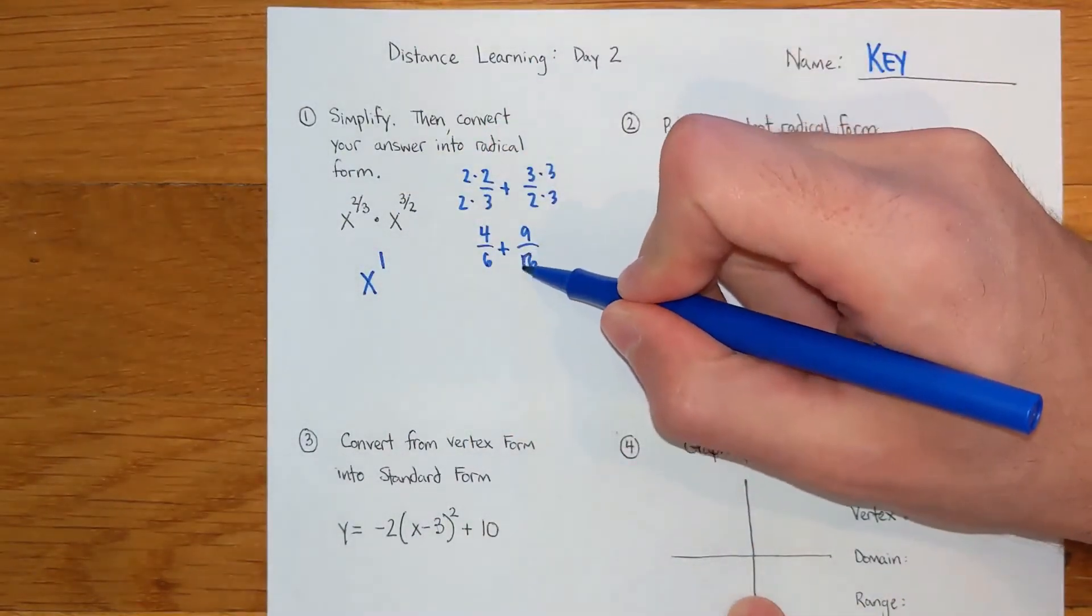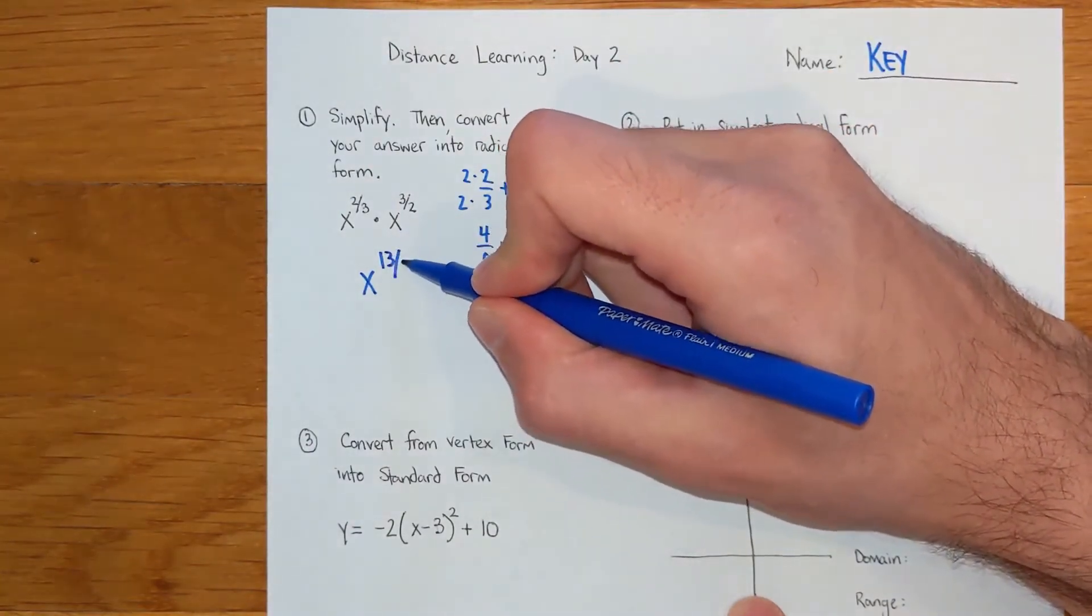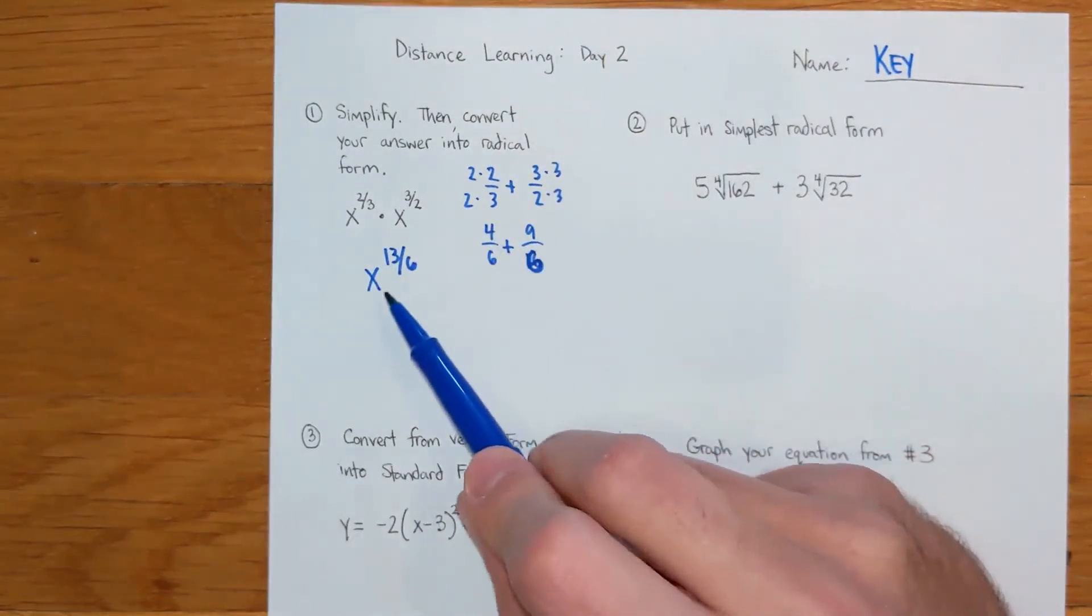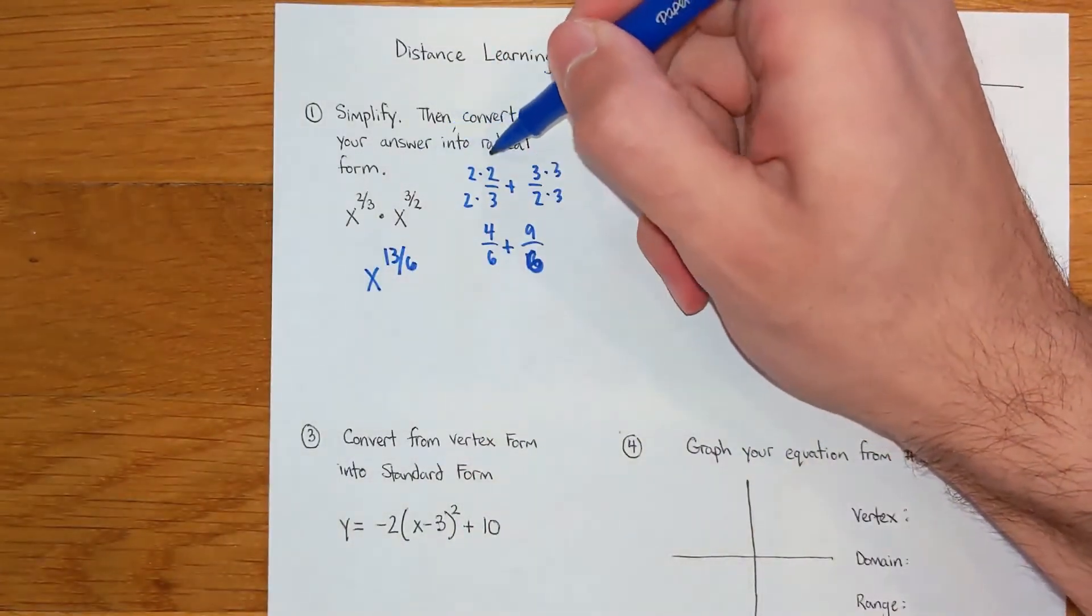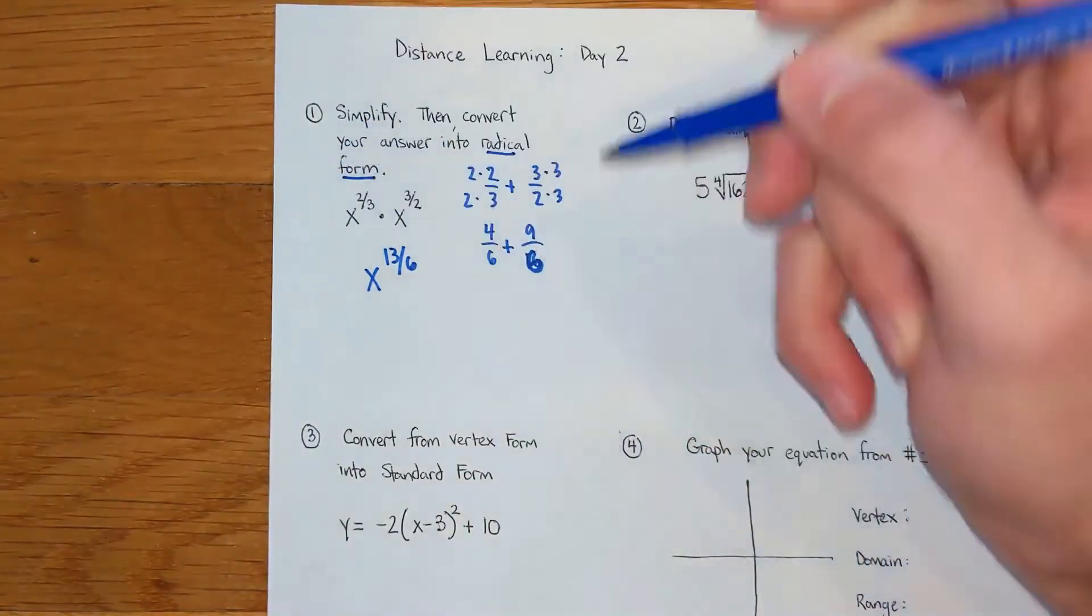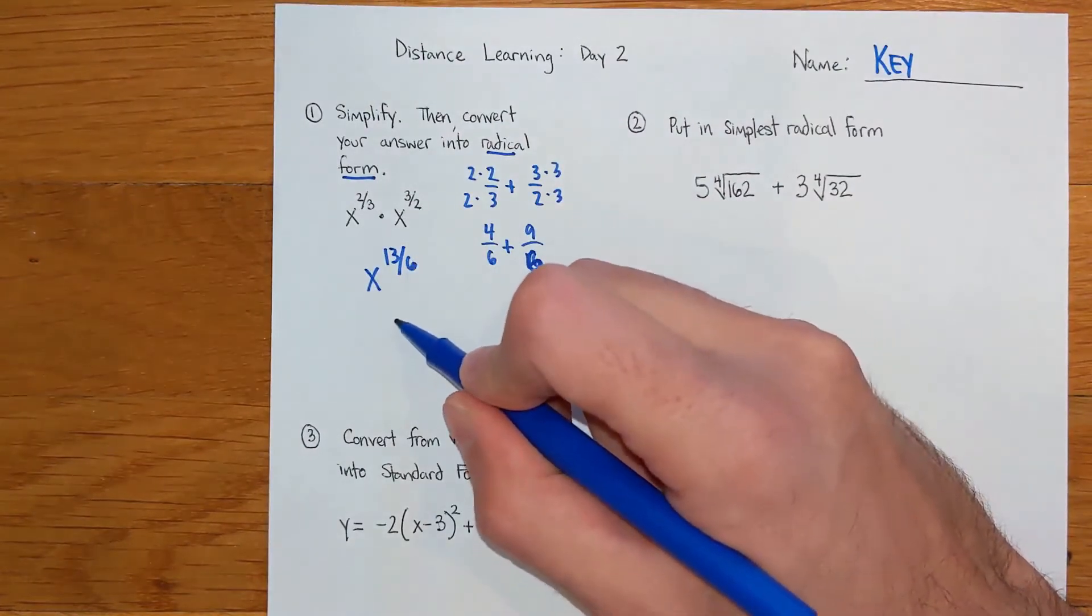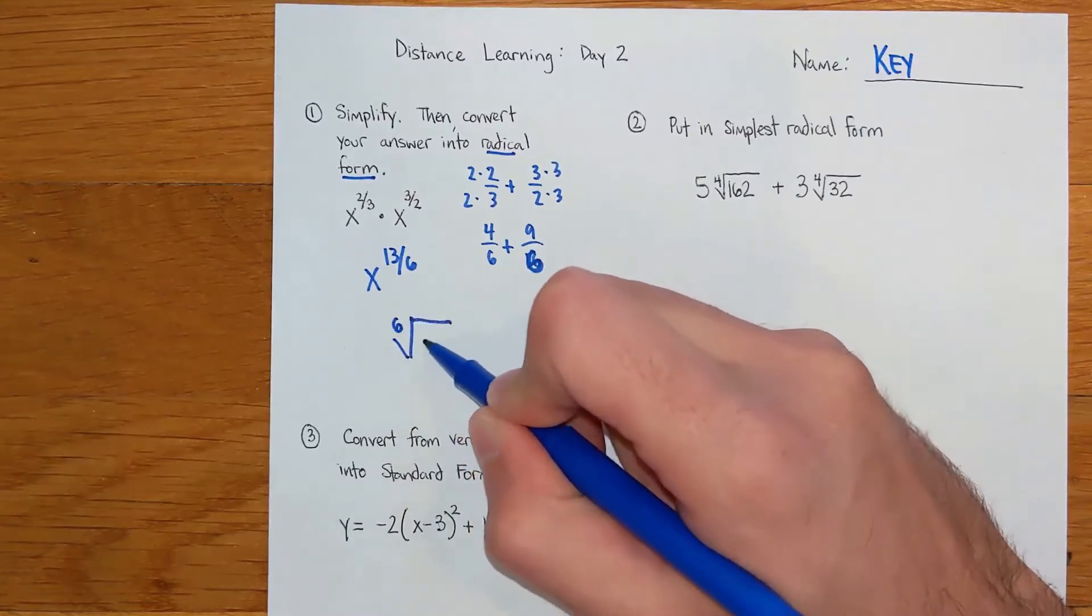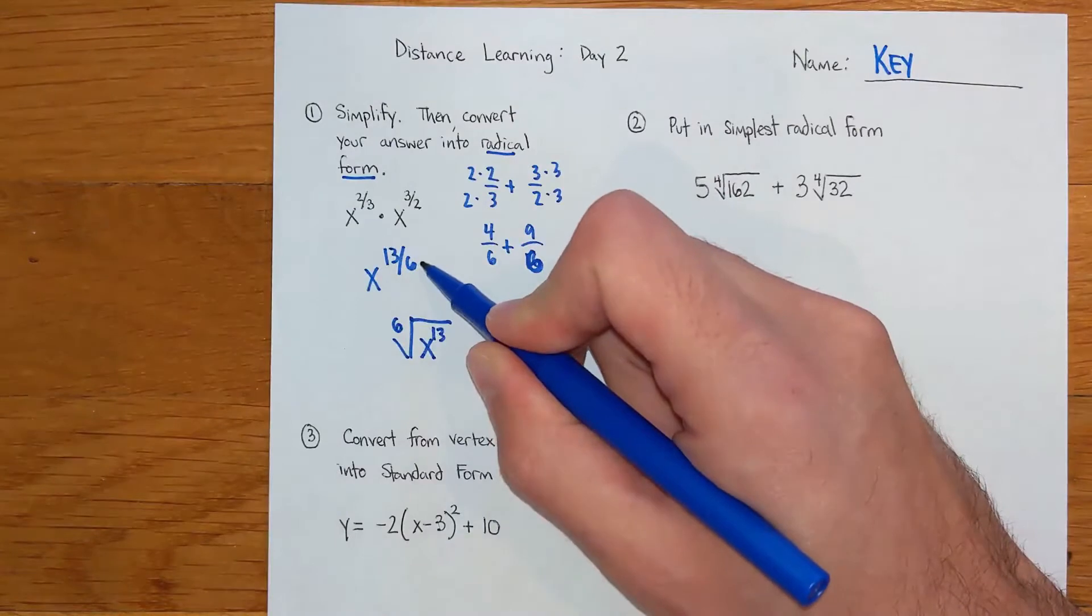The answer is going to be x to the 13 over 6 power. Oops, I wrote 16 there, it should be a 6. When you get this, there was a second step on the instructions. It says to convert your answer to radical form. Remember that for a radical, the bottom number in your fraction exponent is the type of root. This is a sixth root and it's x to the 13th power.